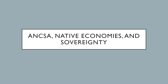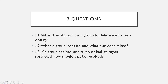The laws and policies that we'll be talking about this week really totally set the stage for what things look like culturally, politically, and economically for Alaska Native peoples today. So I'd like you to consider three questions: Number one, what does it mean for a group to determine its own destiny? Number two, when a group loses its land, what else does it lose? Number three, if a group has had land taken or had its rights restricted, how should that be resolved? I like to ask these in generalities so we can get our thoughts going without some of the complicated politics when thinking about groups right here in our state.